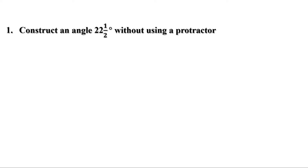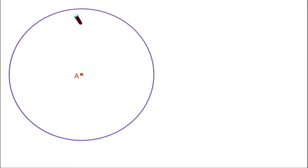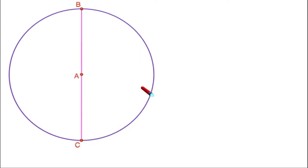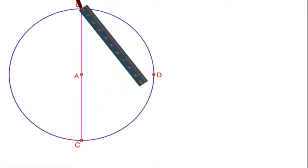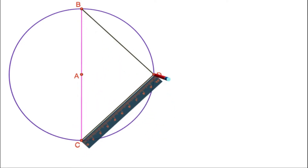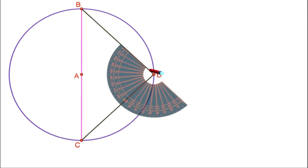We have already discussed how to draw an angle of 22 and a half degrees, but here we have to construct it without using a protractor. Let us see how to do it. Draw a circle first, then draw a diameter. Join the ends of this diameter to a point D on the circle. Then angle D equals 90 degrees, since it is the angle in a semicircle.